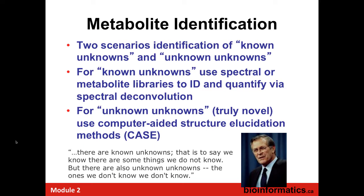For truly novel unknown unknowns, you have to use a technique called computer-aided structure elucidation, or CASE. For the known unknowns, we're going to be using chemical libraries and spectral libraries with spectral deconvolution — looking at things that already have some information about them; we just have to map them.